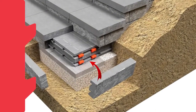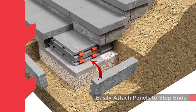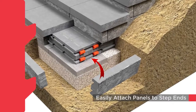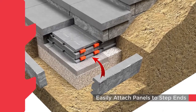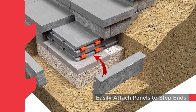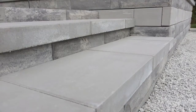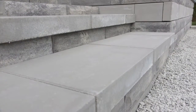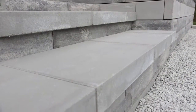If your step has an exposed end, simply treat it as you would a wall corner by attaching a panel to the side of the large backer block. No matter what style of step you design, build it easily with Yukara.